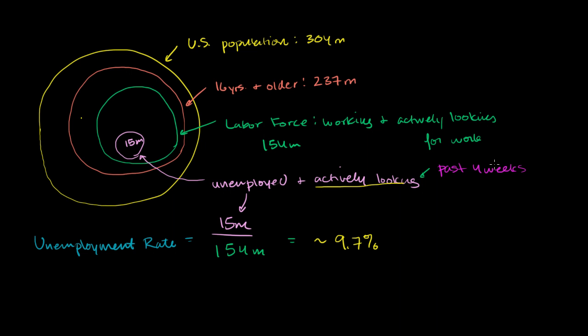How do they know whether these 15 million people have actively searched for jobs in the past four weeks? The answer is they do a survey — they're not going to survey every human being, that would be logistically impossible. Right now they survey about 60,000 people every month and ask: are you employed? Are you unemployed? If unemployed, have you looked for a job in the past four weeks? If yes, you're counted as actively looking. But if you've gotten so discouraged that you're no longer looking, you get thrown out of the labor force entirely.